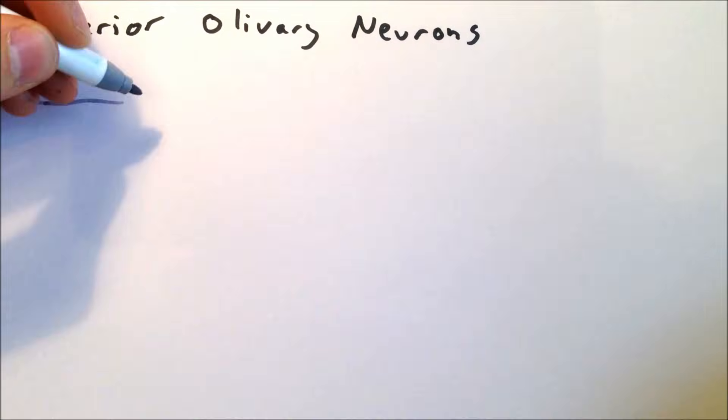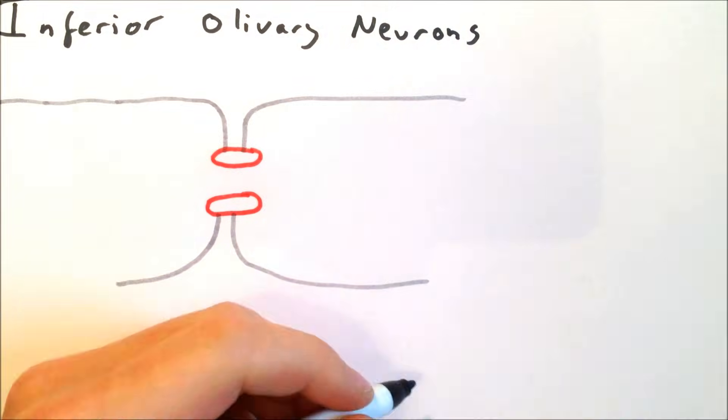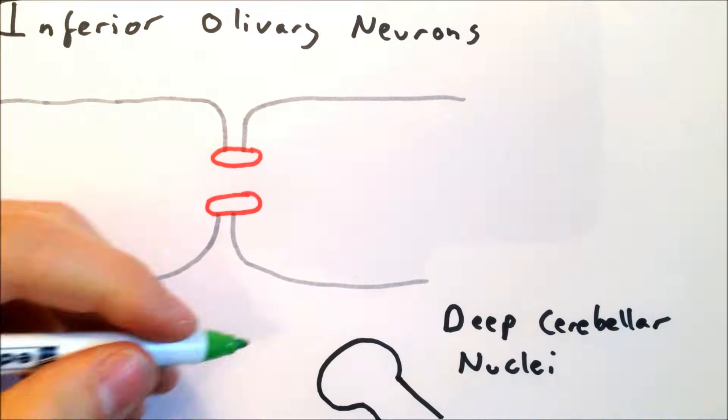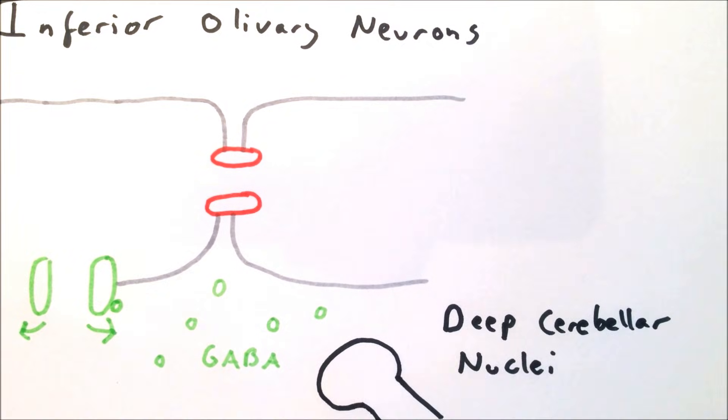Neurons in the inferior olivary complex also receive inhibitory feedback from deep cerebellar nuclei. This feedback opens ion channels and allows current to flow freely in and out of the neurons and counteracts the current flowing between them, effectively decoupling them.